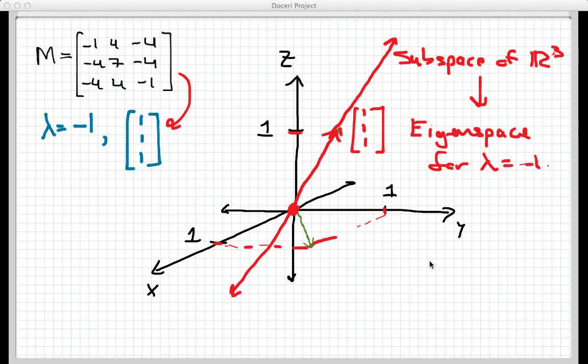In general, the eigenspace of an eigenvalue is the subspace of R^n (R3 in this case) that contains all the eigenvectors that correspond to that eigenvalue. In this particular case,